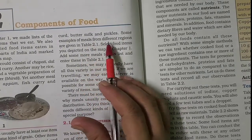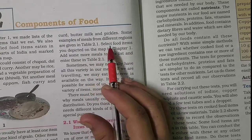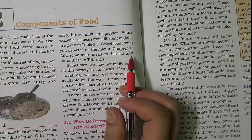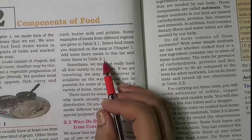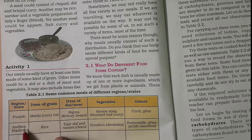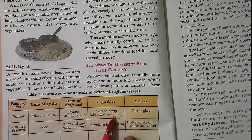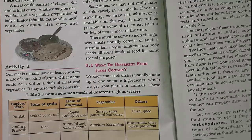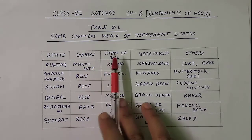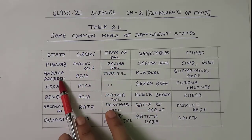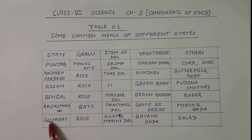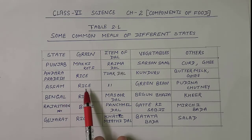Some examples of meals from different regions are given in table 2.1. Select the food items you depicted on a map in chapter 1, add some more meals to this list, and enter them in table 2.1. In this table two states are already given with their meals. I have written a few more states and their special meals.